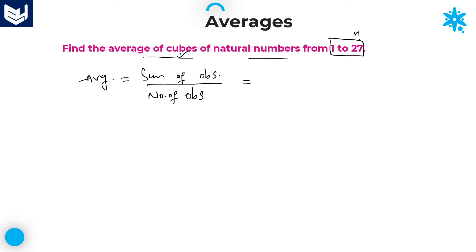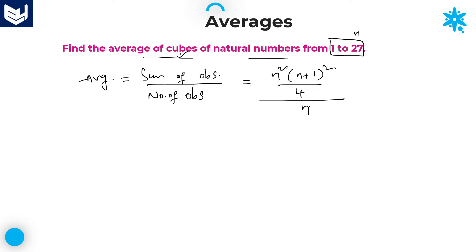Let us take 1 to n. The average of cubes of natural numbers from 1 to n: in the numerator, we write the sum of cubes of n natural numbers, which is n²(n+1)² divided by 4. This is divided by the number of observations, which is n. The n in the numerator and n in the denominator cancel each other.